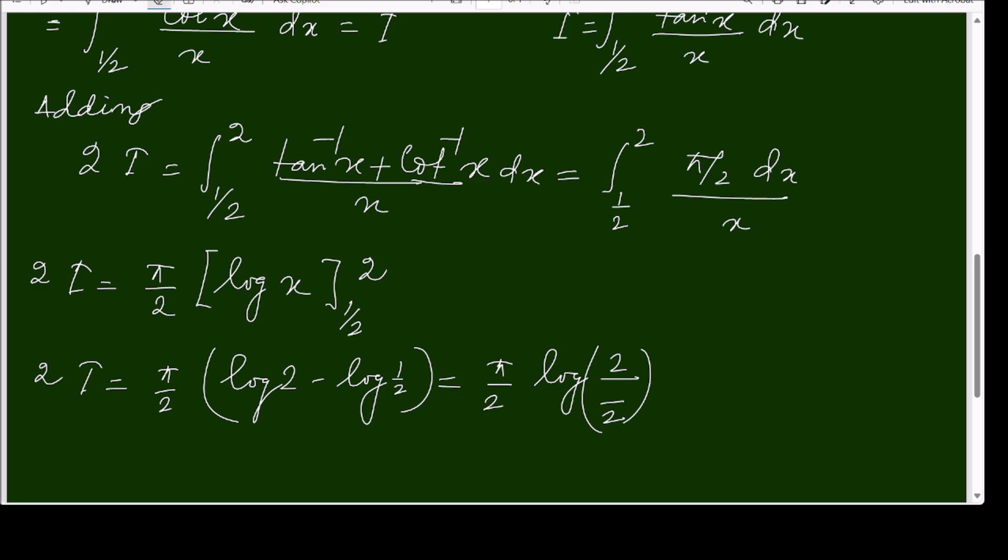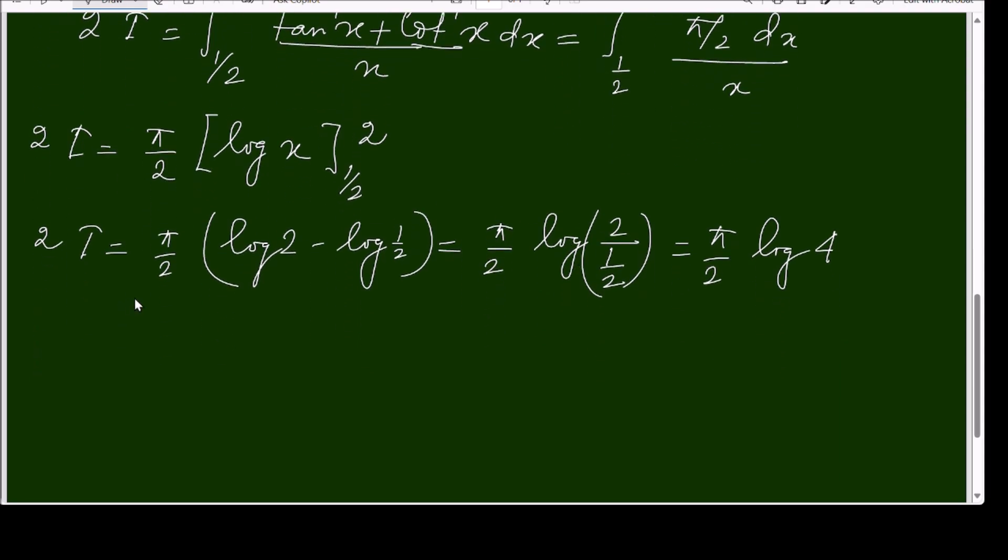This is π by 2 log 2 over half. 2 over half will be 4 only—log 4. And simplifying to match the answer: π by 2 log 2 squared, that is same as 2 π by 2 log 2. I equals π by 2 log 2.